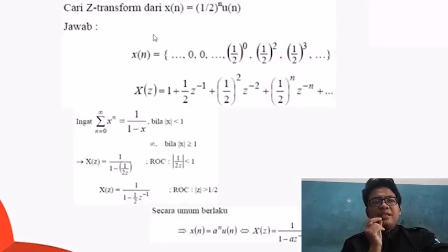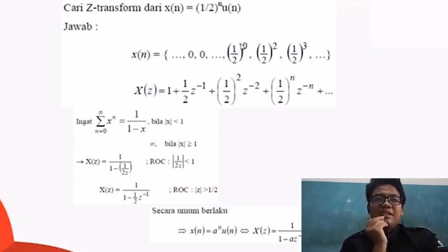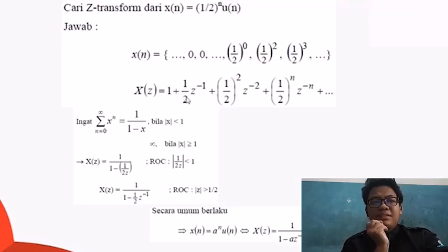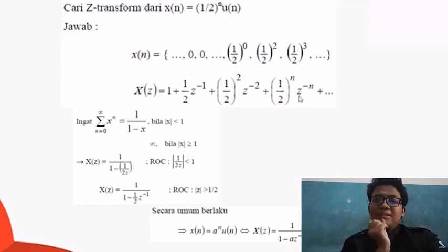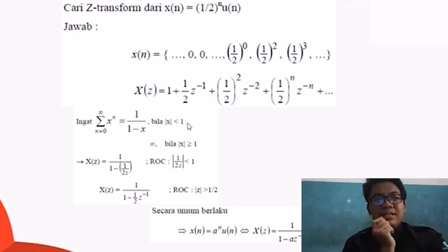Soal: jika transformasi dari X(N) adalah setengah pangkat N dikali U(N), maka X(N) akan bernilai setengah pangkat 0, setengah pangkat 1, setengah pangkat 2, setengah pangkat 3, dan seterusnya. Karena ini ada setengah pangkat N sendiri. Dan X(Z) bernilai 1 plus setengah Z pangkat negatif 1, lalu setengah pangkat 2 dikali Z pangkat negatif 2, dan setengah pangkat N dikali Z pangkat negatif N plus lanjutannya. Selalu ingat X pangkat N sama dengan 1 per (1 minus X) bila X bernilai kurang dari 1.